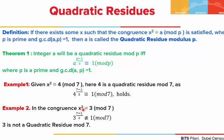In the second example, we have x² ≡ 3 (mod 7). A is 3, p is 7. If we put these values in the congruence, we see that 3³ = 27, and 27 minus 1 gives us 26, which is not divisible by 7. So, as the congruence does not hold, we know that 3 is not a quadratic residue mod 7.